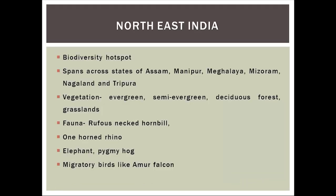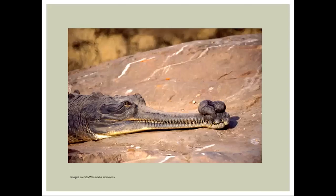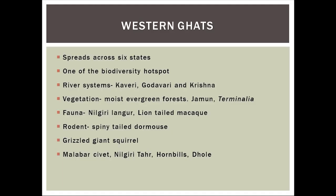The flora or vegetation of Northeast India mostly comprises evergreen forest, semi-evergreen forest, deciduous forest, and grasslands. Let us now revise the two biogeographic zones we have covered recently — Western Ghats and Northeast India.